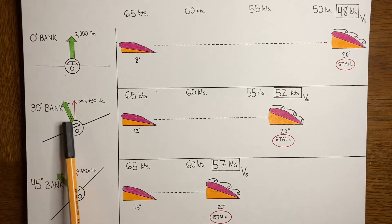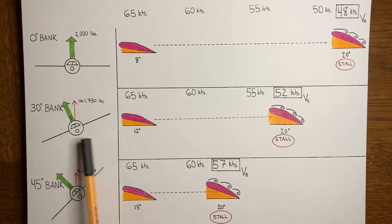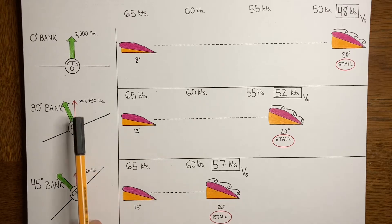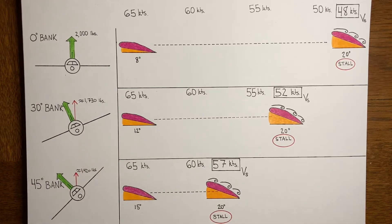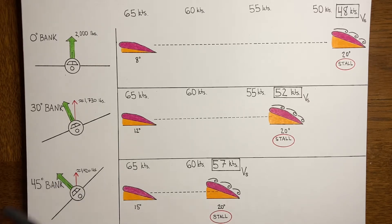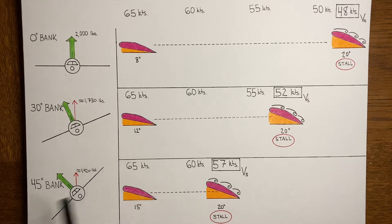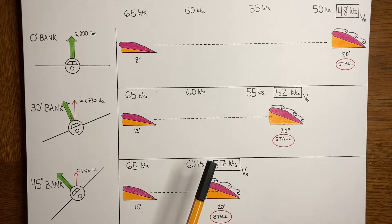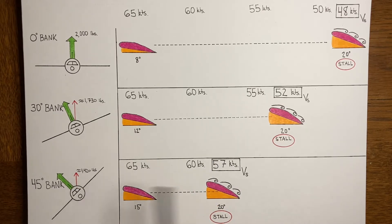In a 30 degree bank, if the total lift is 2,000 pounds, the vertical component is about 1,730 pounds. In a 45 degree bank, that same 2,000 pounds of lift is tilted even more to the side, so more of that lift is directed sideways — the airplane turns at a faster rate — but the amount of lift working to keep the airplane up is even less: about 1,420 pounds acting vertically.